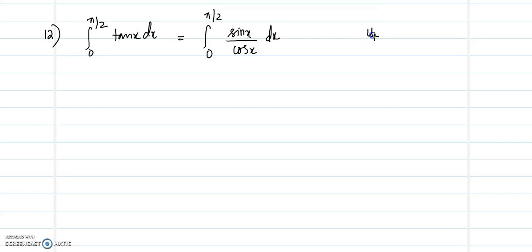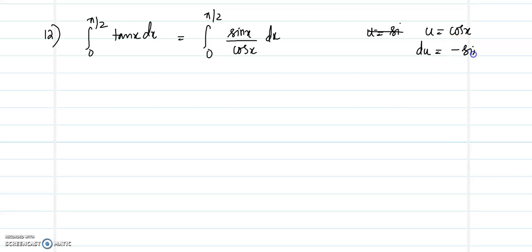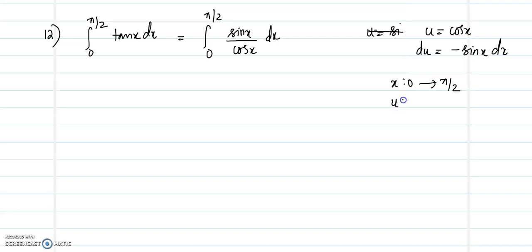Let us put u equal to cos(x). So du will be equal to minus sin(x) dx. As x varies from 0 to π/2, u will vary from cos(0) = 1 to cos(π/2) = 0.